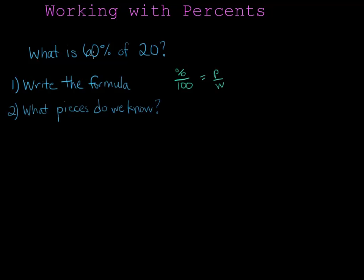Now we need to figure out what pieces we know. Well, 60% is clearly the percent, so I'm going to label that percent. And 20, that's a little harder. It's the part of the whole. We take parts of wholes, so 20 is the whole. The of is the clue. That means that the part is the piece that's missing.